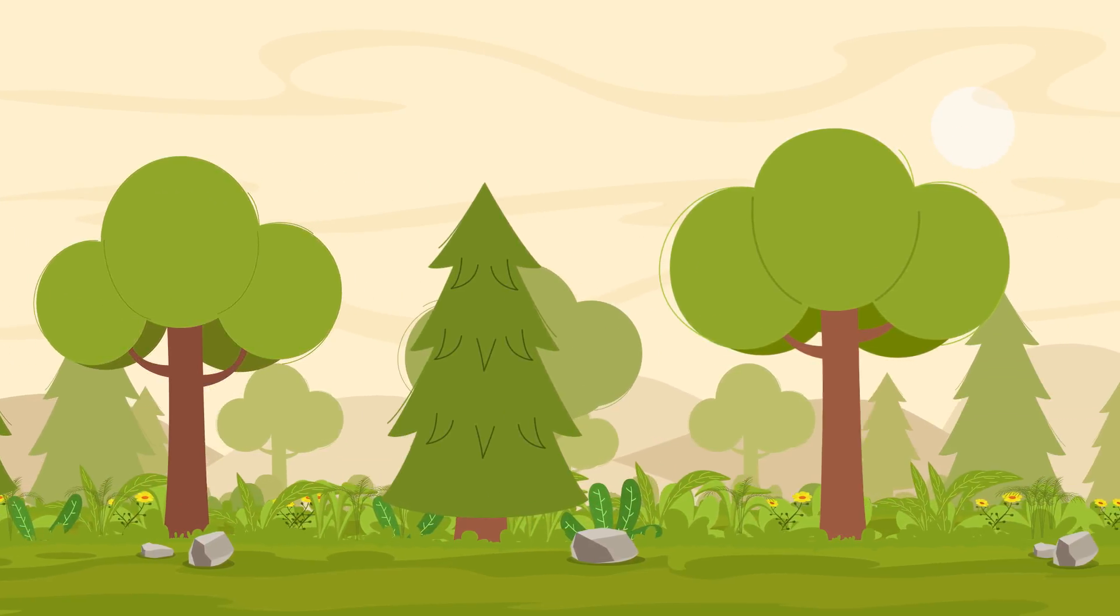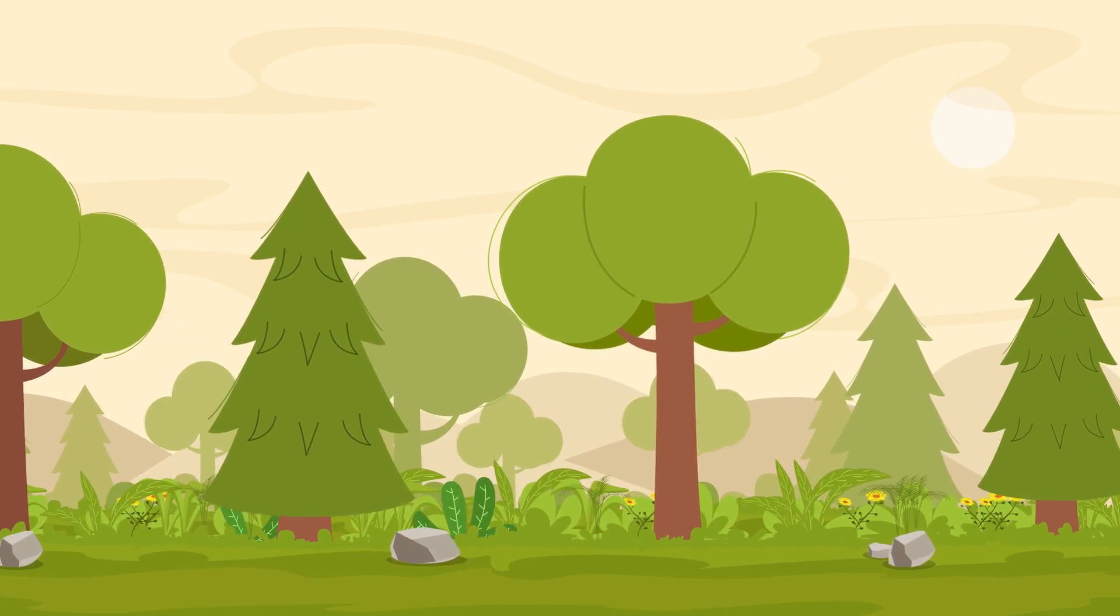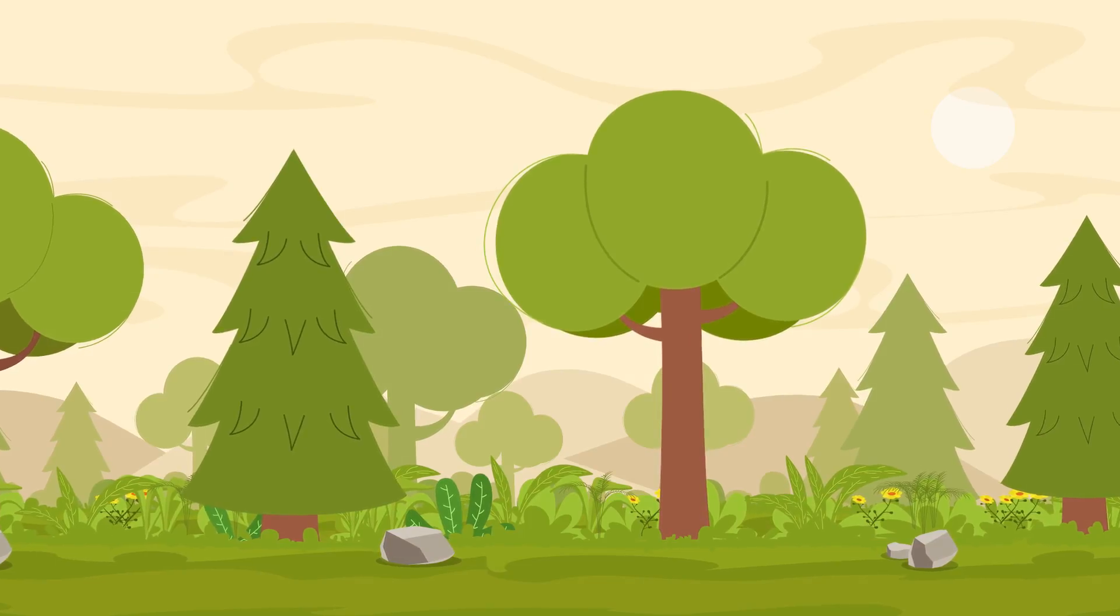In ecology, niche is the set of requirements that each species needs in order to grow and reproduce. Some need more light, others need more water.